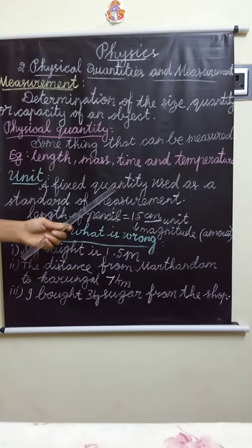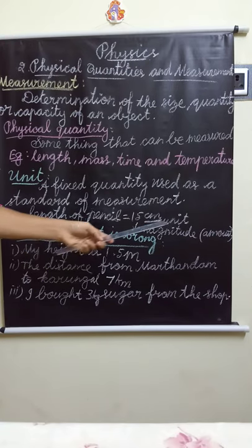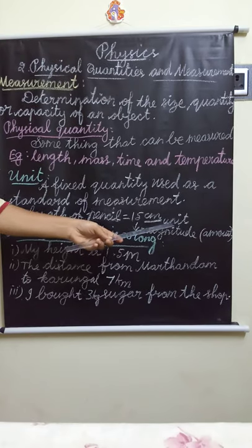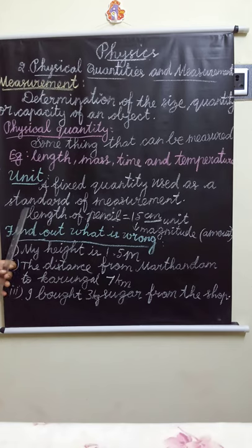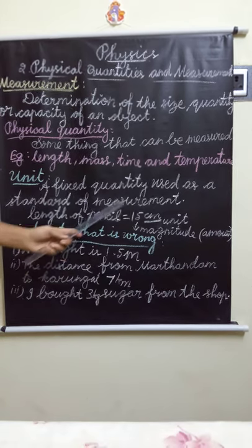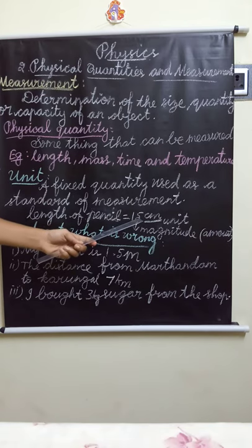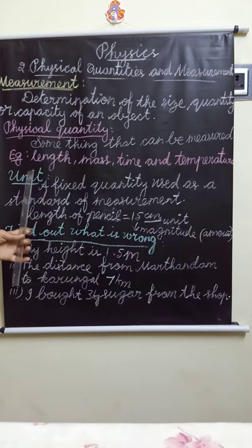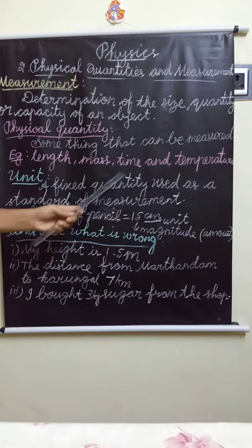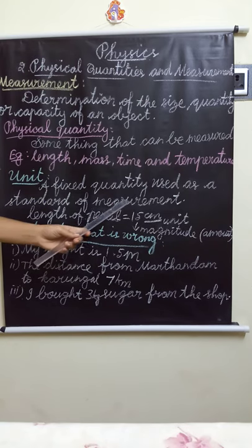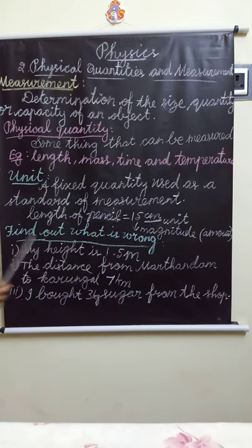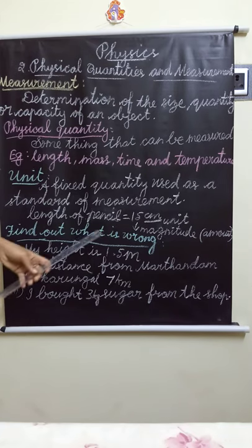What is a unit? A fixed quantity. What is the fixed quantity? The unit — centimetre. Centimetre is the fixed quantity and standard of measurement. So, a unit is a fixed quantity used as a standard of measurement.